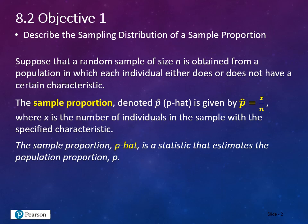Suppose we have a random sample of size n obtained from a population in which each individual either does or does not have a certain characteristic. The sample proportion, denoted p-hat, is given by p-hat equals x over n, where x is the number of individuals in the sample with the specific characteristic, and n is the total number of samples taken.